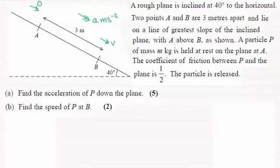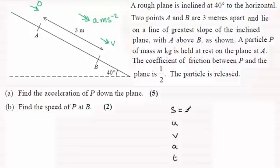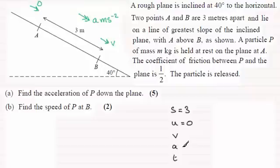For part a, I'd think about using a SUVAT-based equation — s, u, v, a, and t. I know s, the displacement, is three meters, and u is zero because it started from rest. We don't know the final velocity and we don't have the time, so there's no equation here that can directly find the acceleration a.